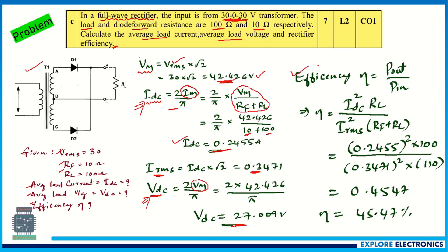For rectifier efficiency, output power Pout = Idc² × RL and input power Pin = Irms² × (Rf + RL). So efficiency = (0.2455² × 100) / (0.3471² × 110) = 0.4547, which is 45.47 percent. This completes the full wave rectifier problem.